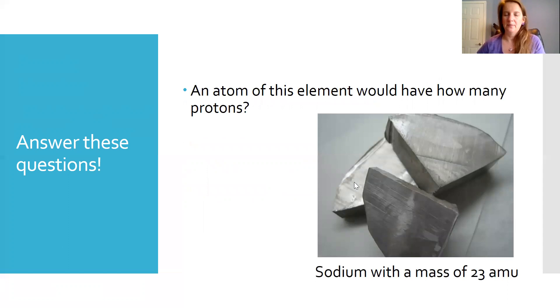Now this one, I say that an atom of this element would have how many protons? And it tells me that we have sodium with a mass of 23 amu. So sodium, we can look at our periodic table, look at the atomic number of sodium, and that's going to be 11. Then it wants to know how many neutrons. And so if we know the mass, and the mass is equal to the protons plus the neutrons. If we take the mass and we subtract the protons, we'll get our neutrons, which is 12. How many electrons? Well, this is a neutral atom, which is going to be equivalent to the number of protons. So 11.